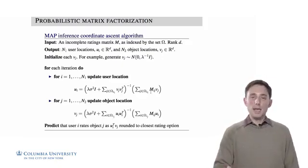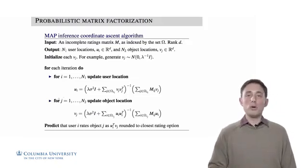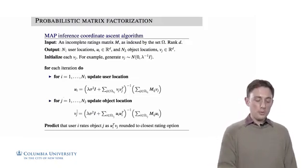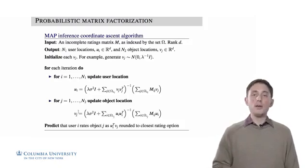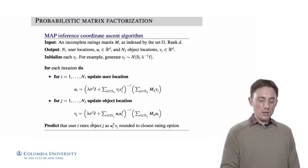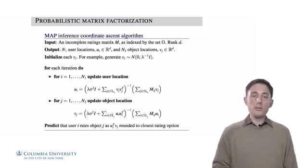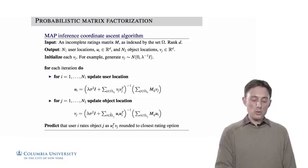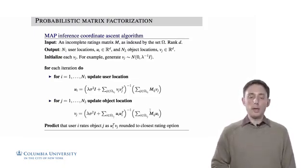Then the second half of the same iteration will be to update the locations for all of the objects. And so for each value J, we update the location for object J, solving this equation, where we use the relevant locations of the users. We use all of the users who have rated that object, and also all of their ratings here.